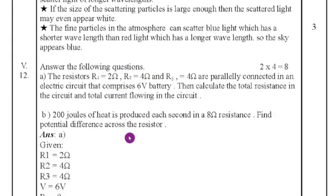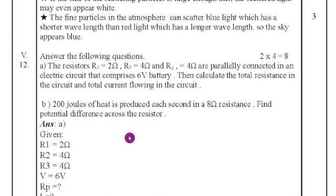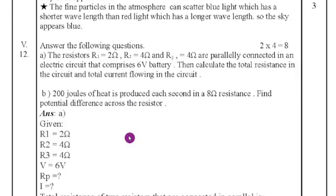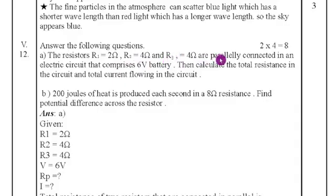Fifth main: answer the following questions — two questions carrying eight marks. Twelfth question part A: resistors R1 = 2 ohm, R2 = 4 ohm, and R3 = 4 ohm are connected in parallel in an electric circuit with a 6-volt battery. Calculate the total current and total resistance.